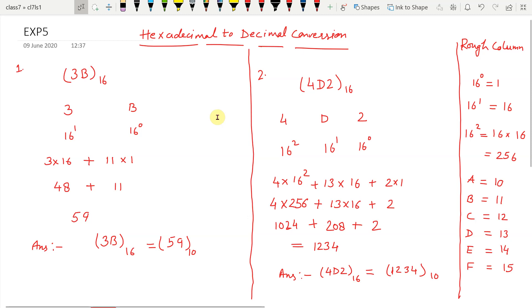Children, you are going to learn how to convert hexadecimal numbers into decimal numbers in this video. 3B is the hexadecimal number. Write the given number in this form.